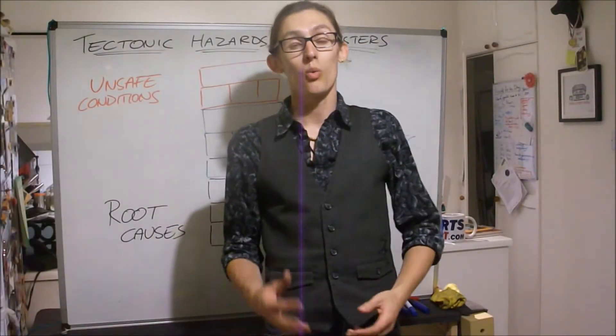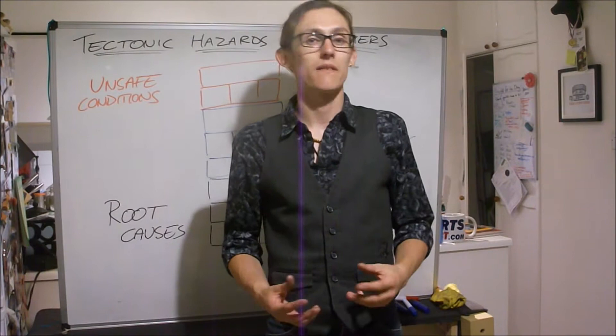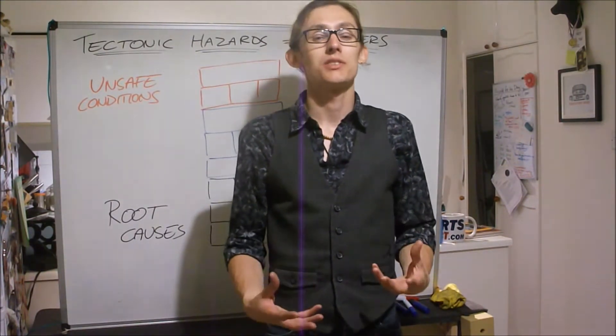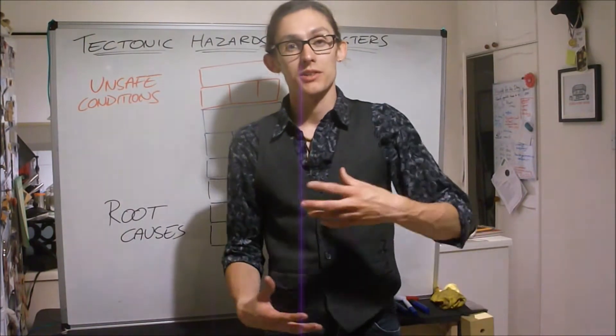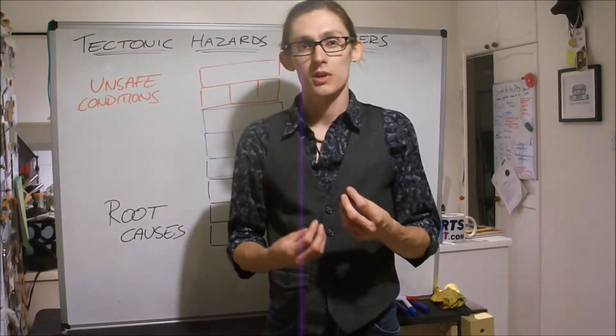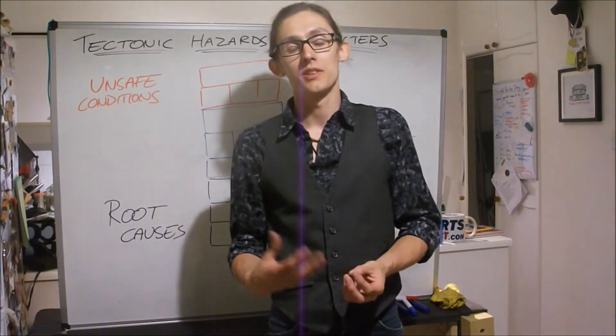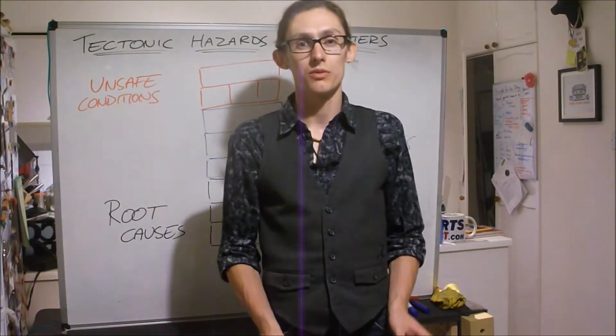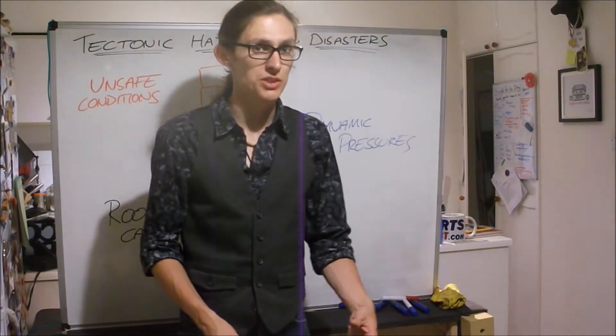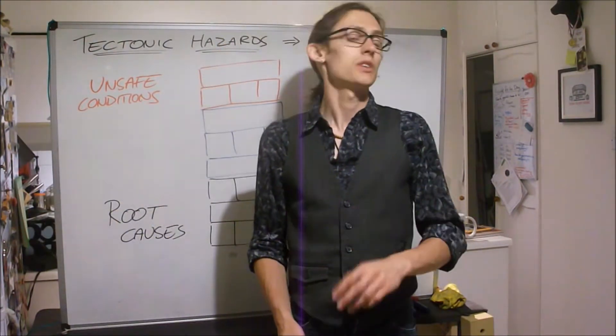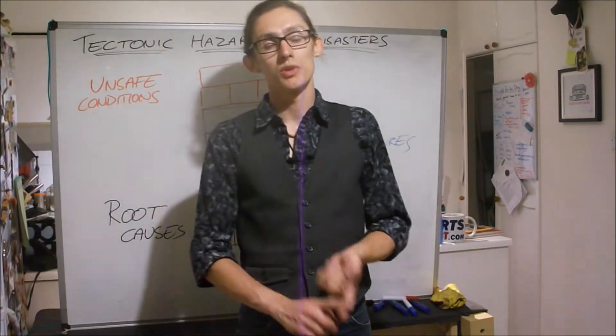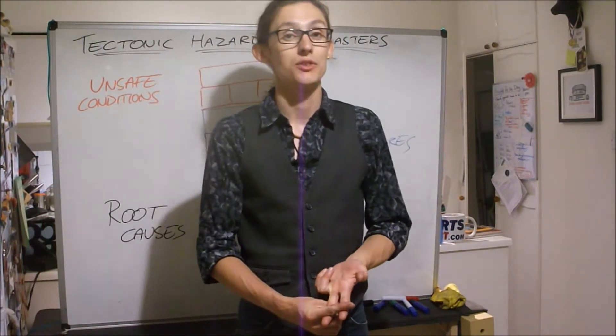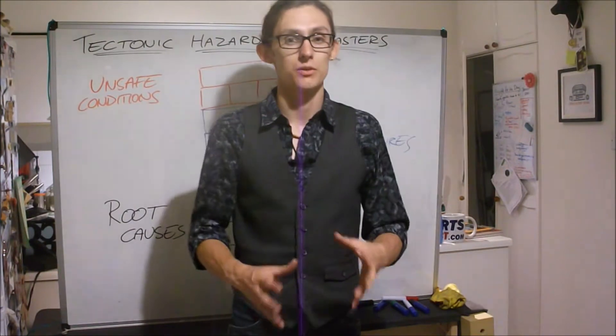Hi folks, in this video we're going to be thinking a little bit closer about vulnerability and how it impacts more subtly on a disaster occurring. We're going to use the CRUNCH model for this, otherwise known as the Pressure and Release model. For this, you'll need to have watched videos on the risk equation and on resilience as well in order for this to make sense.